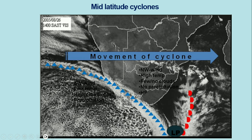As the cyclone moves from west to east, all of South Africa will eventually experience the cold sector of this cold front, which consists of extreme weather and heavy rains.